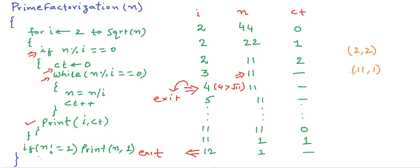So in our new algorithm, the pair 11 and 1 is printed after we exit the for loop. This represents something like 2 to the power 2 into 11 to the power 1. You can modify the algorithm to print in that form — I leave that as an exercise for you.